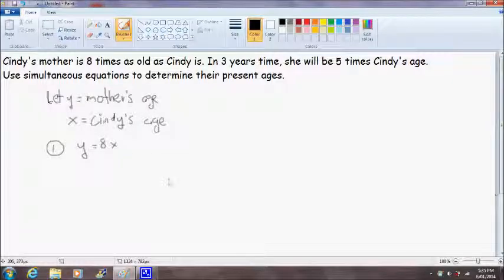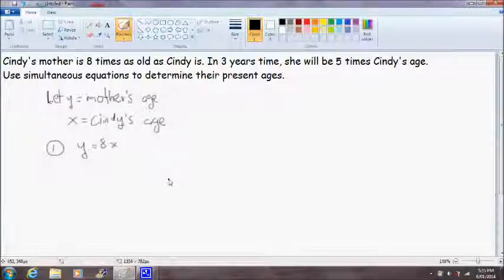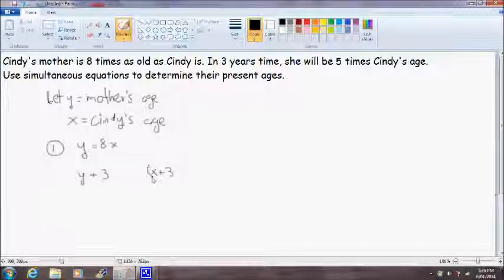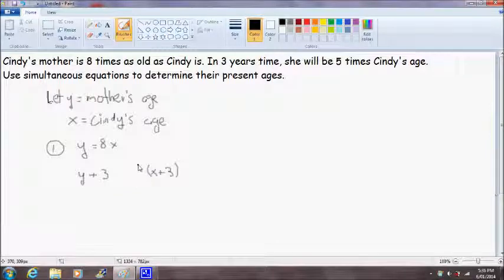To formulate equation 2 is a little bit more tricky because we have to realize that in 3 years time both Cindy and Cindy's mother will be 3 years older than their present ages, obviously. So that stated, in 3 years time Cindy's mother will be y plus 3 years old and Cindy will be x plus 3 years old. But we are also given that Cindy's mother is 5 times older than Cindy in 3 years time, so Cindy's age will have to be increased by a factor of 5 to equal her mother's age.